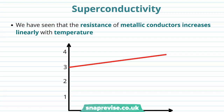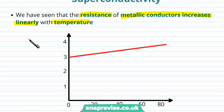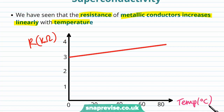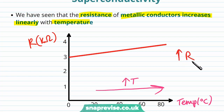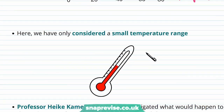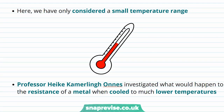We're going to start off by introducing the idea of superconductivity. We have seen that the resistance of metallic conductors increases linearly with temperature. On the y-axis we have the resistance in kiloohms, on the x-axis we have the temperature in degrees Celsius, and as temperature increases, resistance also increases — a linear relationship.